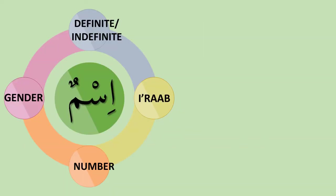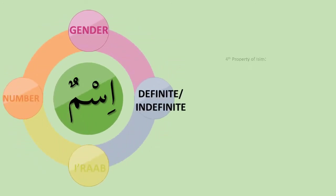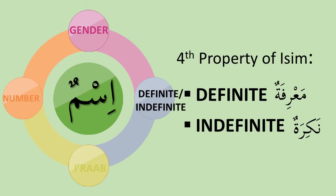Now we should be able to tackle the fourth property: definite and indefinite isim. All isim can be categorized into either definite or indefinite. Definite isim are called isim ma'rifah — ma'rifah means something known or recognized. Isim ma'rifah are nouns which, at the mere mention of that isim, one knows exactly what you are referring to. Isim nakirah, on the other hand, are indefinite nouns which refer to non-specific persons, places, things, etc.